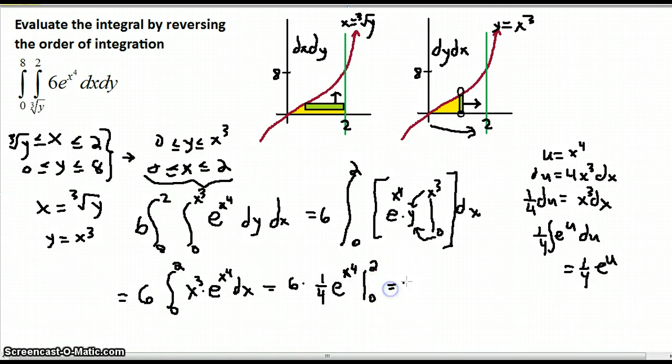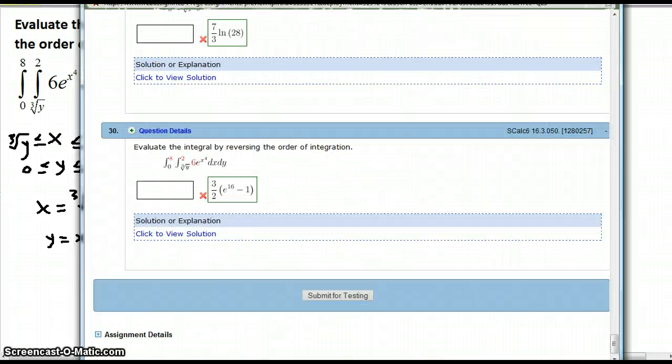So that's going to be 3 halves once we reduce, e to the 16 by plugging in 2. 2 to the 4 is 16. And then e to the 0 is 1. We can't assume that's going to zero out like things normally happen for us. So 3 halves e to the 16 minus 1.